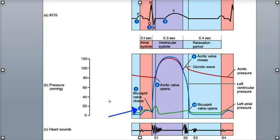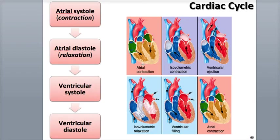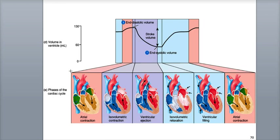Both atria simultaneously contract, which increases the pressure on the blood in each atrium. This higher pressure results in blood being forced out of each atrium through the open atrioventricular, or AV, valves and into the ventricles. The semilunar valves are closed. As atrial systole ends, ventricular diastole, or relaxation, also comes to a close as both ventricles fill with blood.